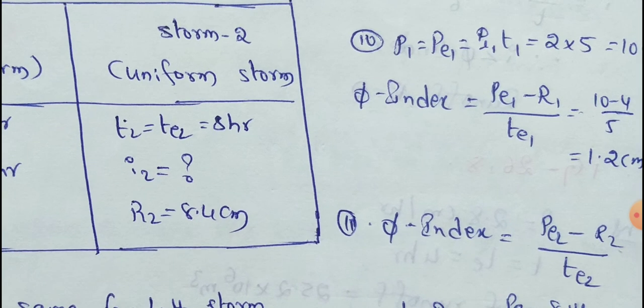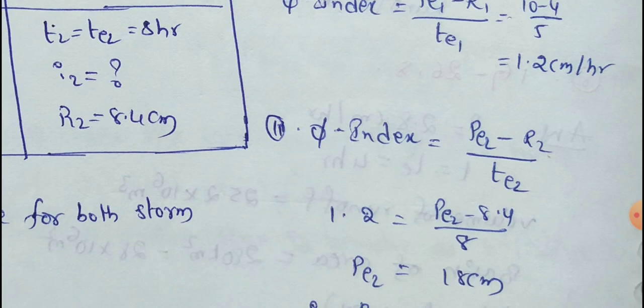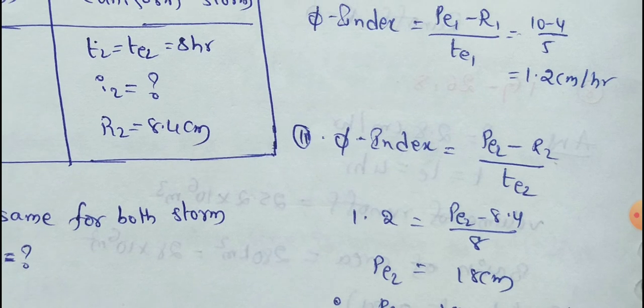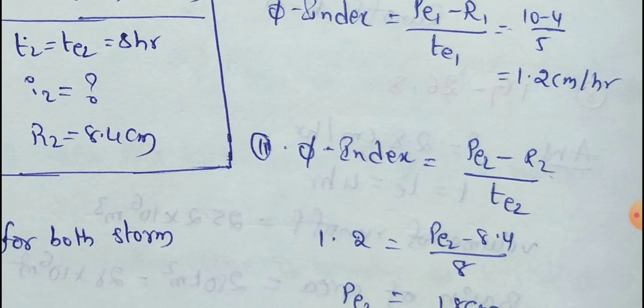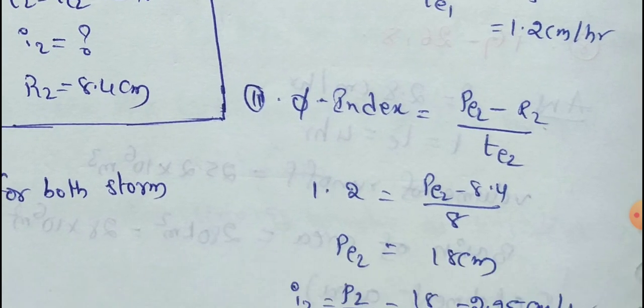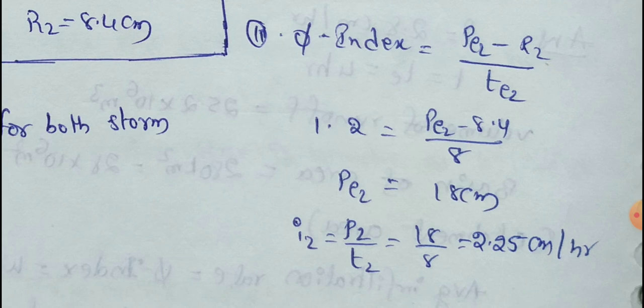Next, we find out i2, the intensity of the second storm. We find out PE2 minus R2 divided by TE2. The PE2 value is to be determined. So: 1.2 equals PE2 minus 8.4, divided by 8. Solving, PE2 equals 18 cm.